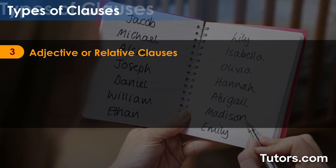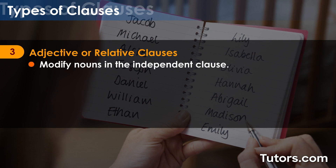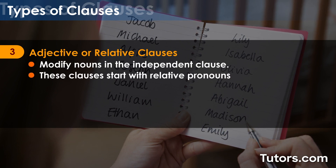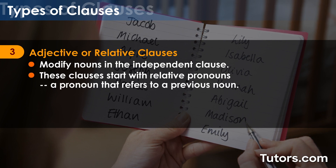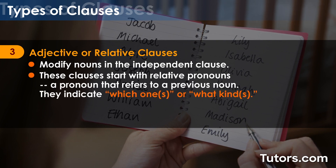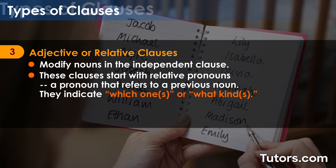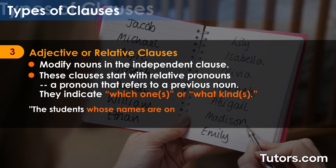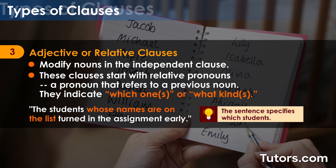Adjective or relative clauses modify nouns in the independent clause. These clauses start with relative pronouns, a pronoun that refers to a previous noun. They indicate which ones or what kind. In this example, "whose names are on the list" specifies which students.